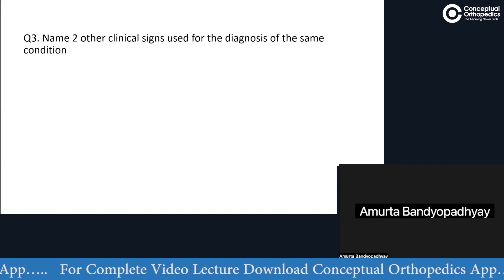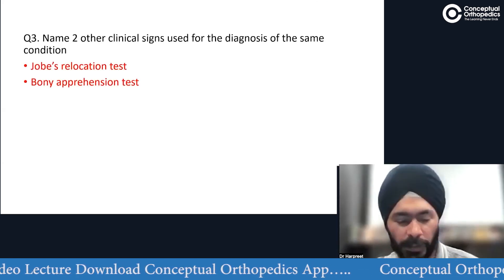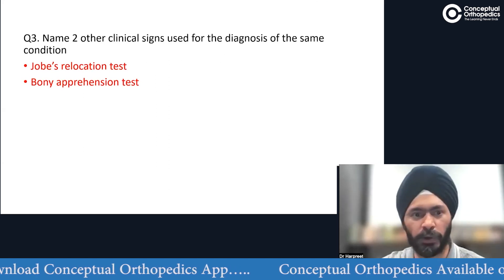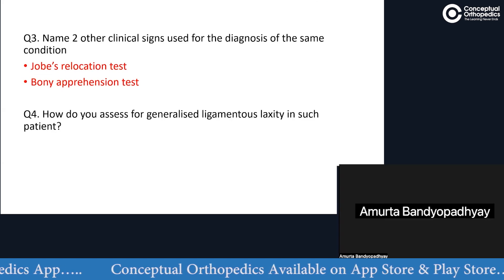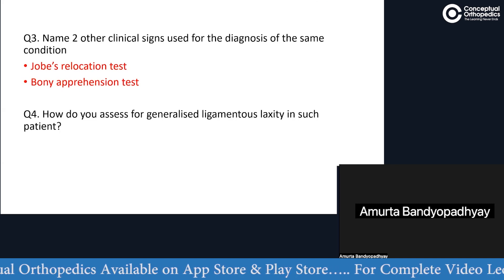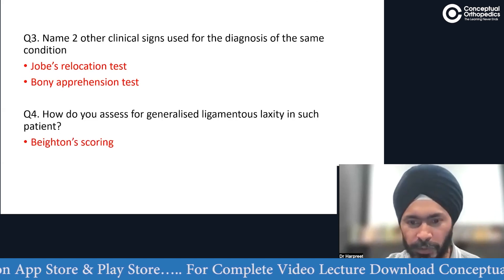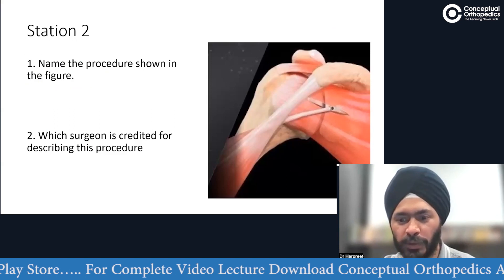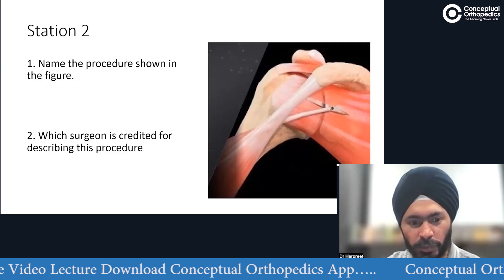Name two other clinical signs used for diagnosis of the same condition. Bony apprehension test — yes. Relocation test — yes. Anterior drawer — you can name as many as you want, they're just asking for two signs. How do you assess for generalized ligamentous laxity in such a patient? By means of the Beighton scoring system — perfect. Full marks for all these questions.